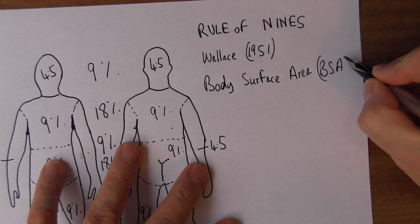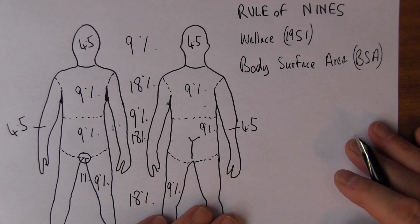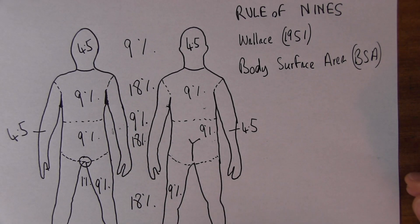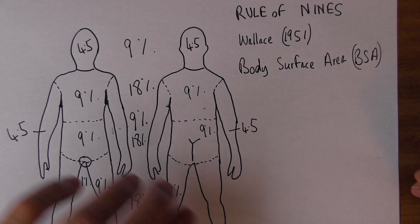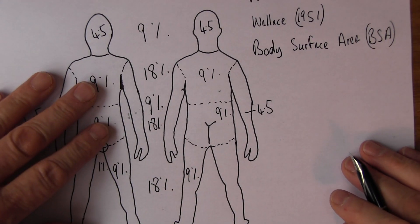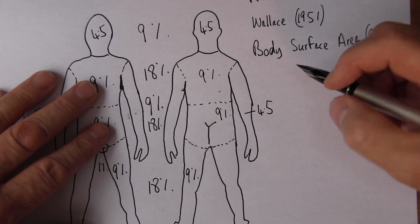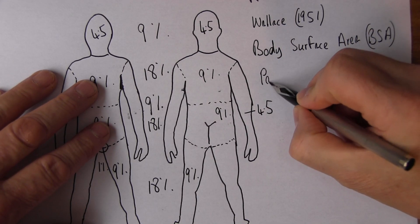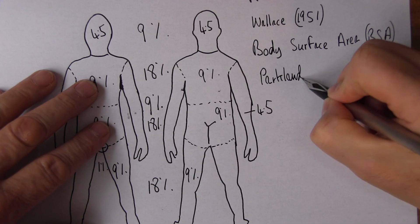Now it's good for our overall understanding of the proportions of the body, but it's also important because if someone's got significant burns — maybe 20% or more — they're going to need intravenous fluid replacement. It's important to know the body surface area of the burn involved, and you're probably going to work out the volumes using the Parkland formula.